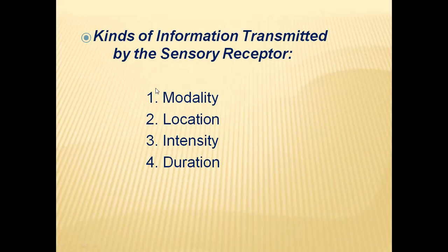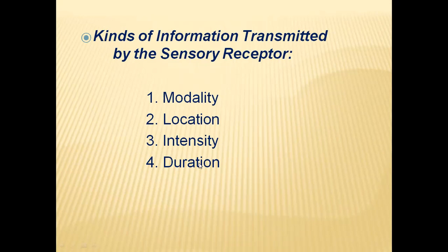Sensory receptors receive a few key pieces of information regarding the stimulus: modality (the type of stimulus), location (where it is), intensity (whether the stimulus is strong or weak), and duration (for how long the stimulus has been present). All this information is received by the receptor and transmitted into the cell.